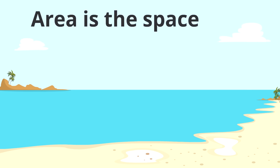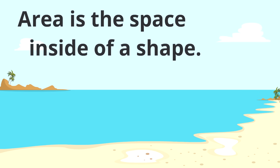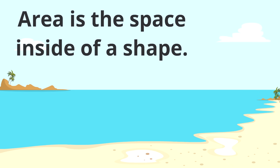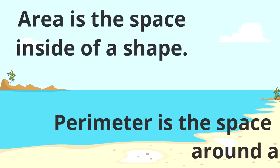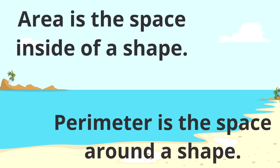Area is the space inside of a shape, and perimeter is the space around a shape. So they're very different, aren't they? In this video, it's all about area. We're going to learn how to find the space inside of a shape.